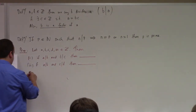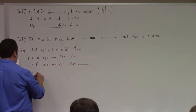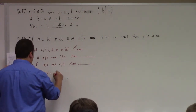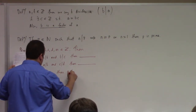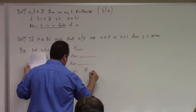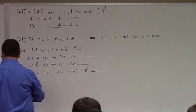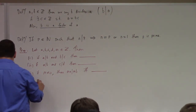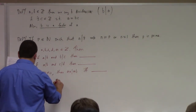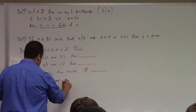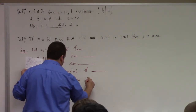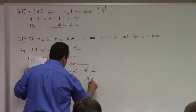Three: if m is not equal to zero, then m·a divides m·b if and only if — fill in the blank. And finally, point four: if d divides a and a is not equal to zero, then the absolute value of d is less than or equal to the absolute value of a.